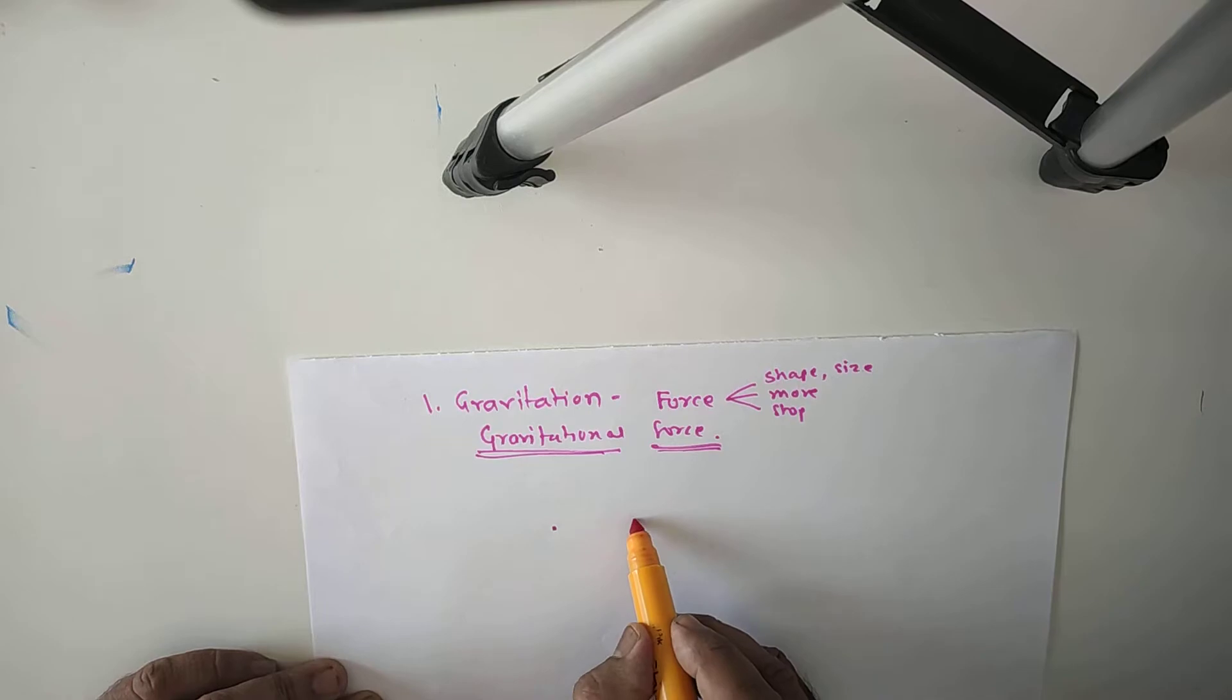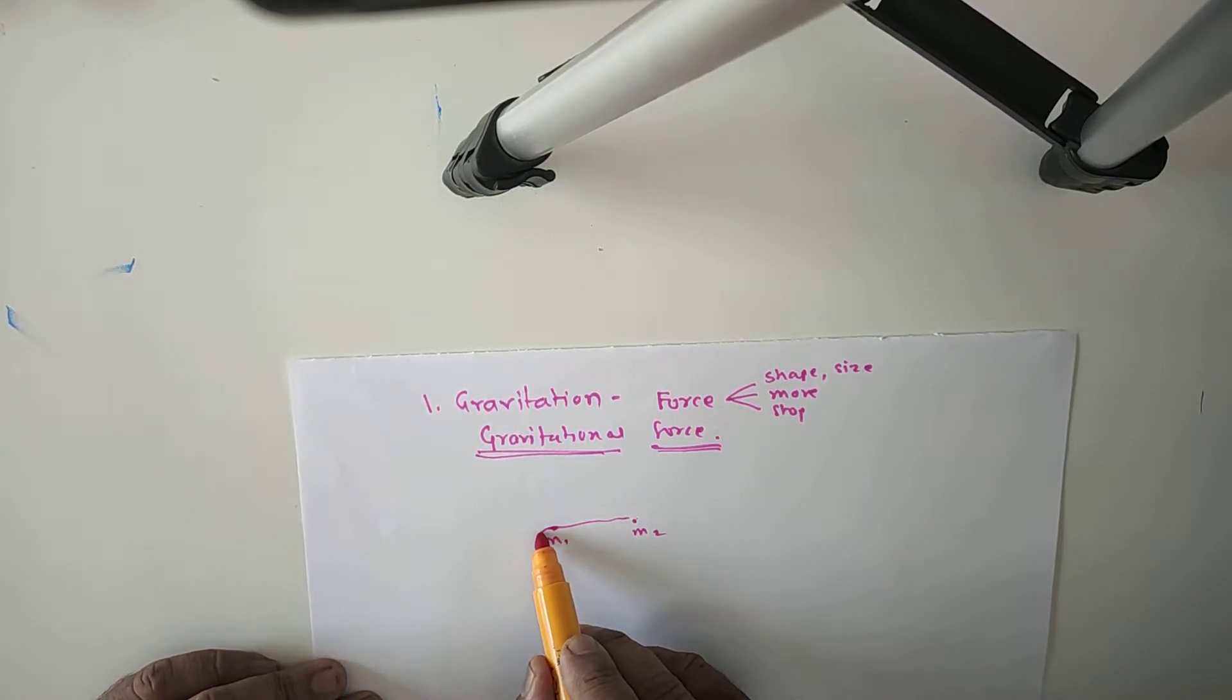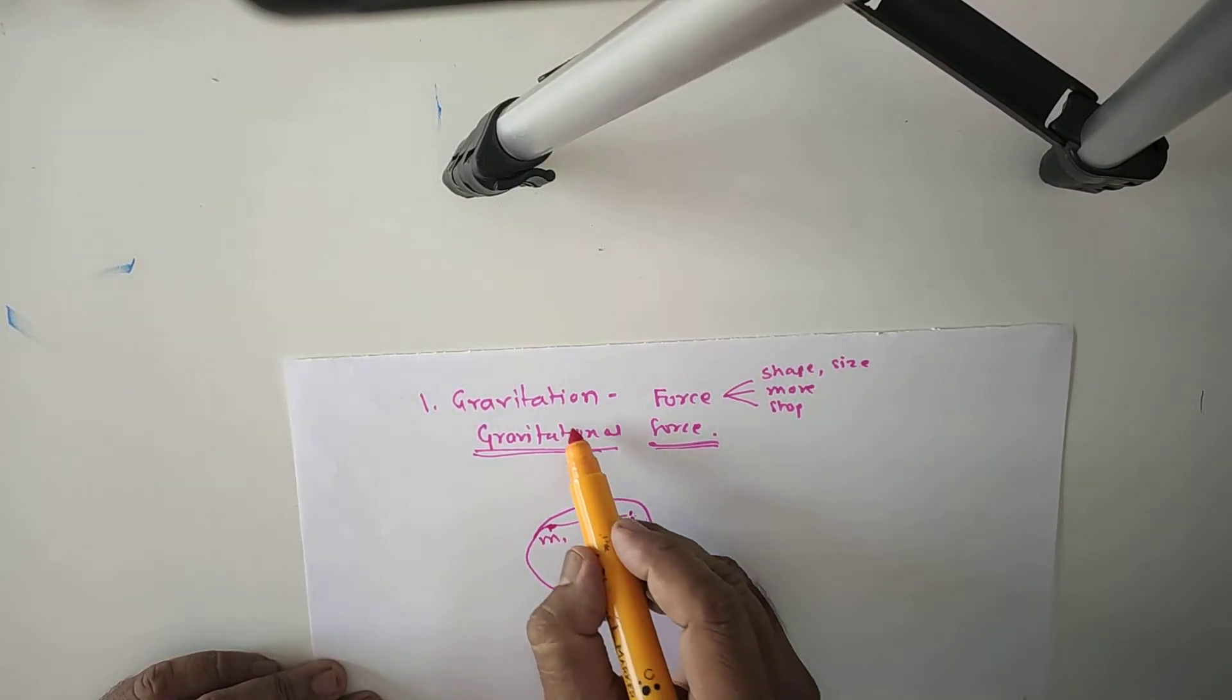Suppose these are the two objects having masses M1 and M2. Then there is a gravitational force between them which acts not only on earth. Suppose this is the earth and these are the two objects, but also in the universe.